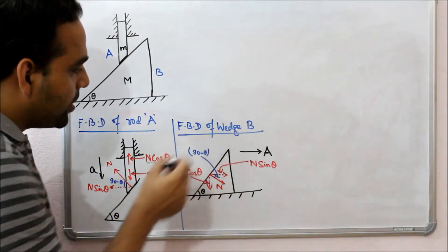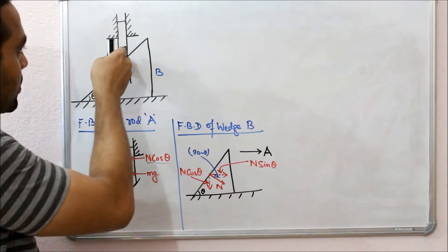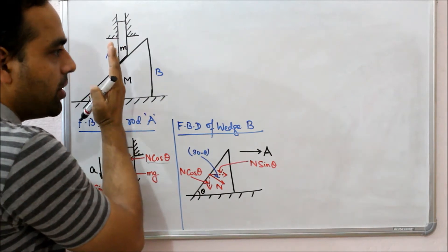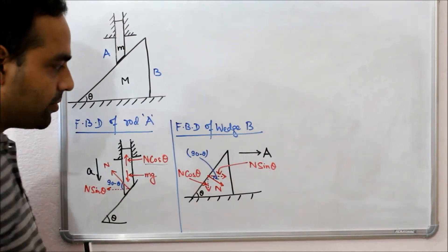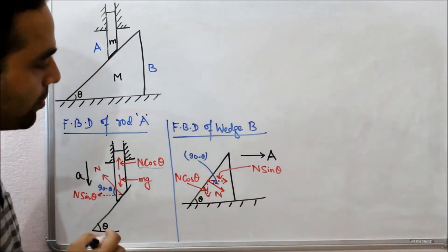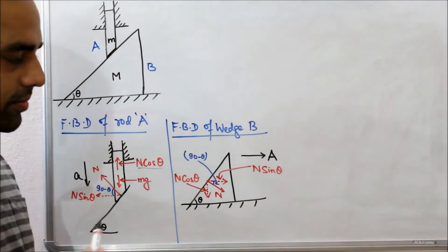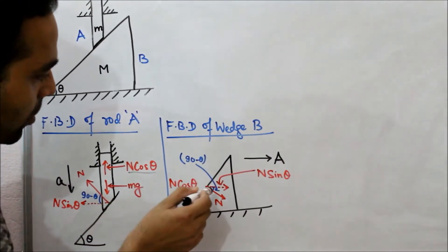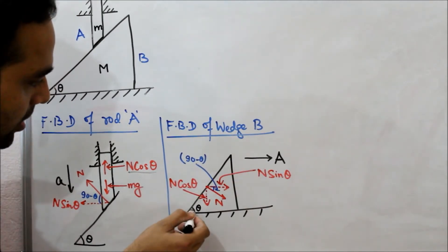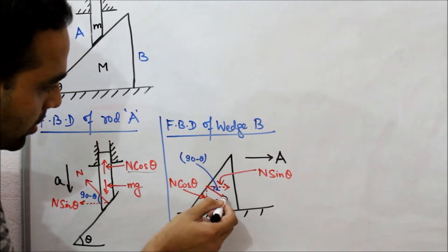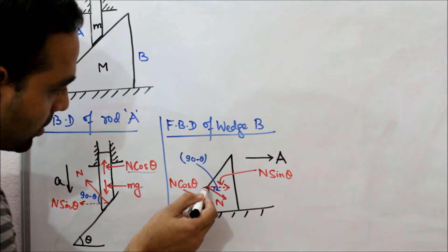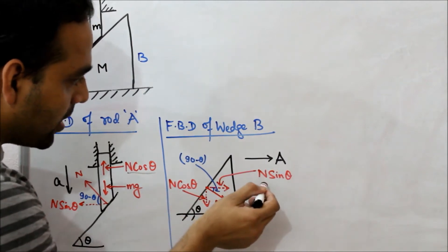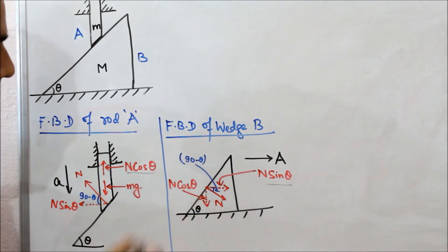Similarly, for the free body diagram of wedge B, if the rod is released it moves along the vertical direction, due to which wedge B is constrained to move along the horizontal direction. Let big 'A' be the acceleration of the wedge along the horizontal direction. The forces acting on the wedge along this direction is the component of normal force N sinθ. The angle that the normal force subtends with the horizontal axis is 90 minus θ, so the component of normal force along the horizontal is N sinθ and along the vertical direction it is N cosθ.